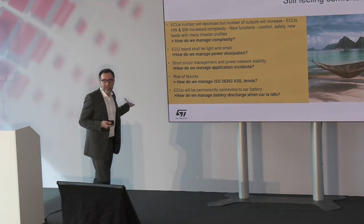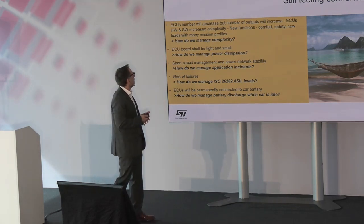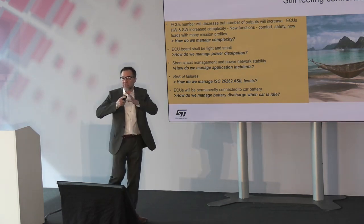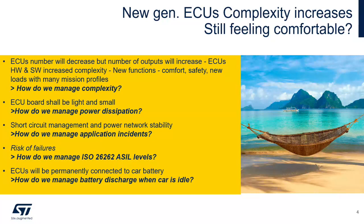How do we manage complexity? ECU boards shall be light and small. If we put a lot of outputs, the trend would be to increase dimensions, but we want to keep or even reduce the dimension — because of energy, CO2, and because the car has to weigh less.